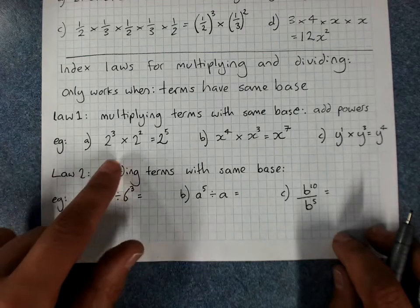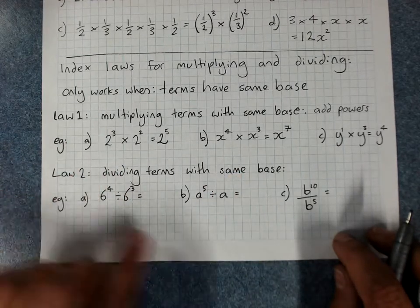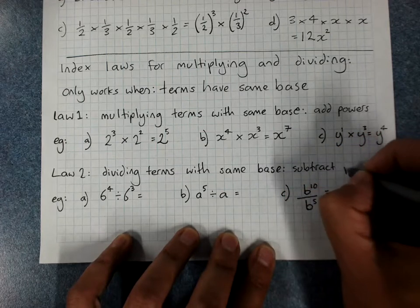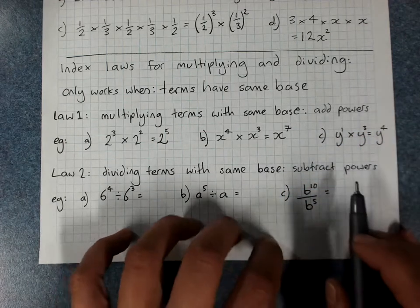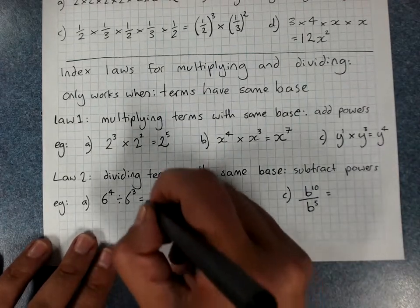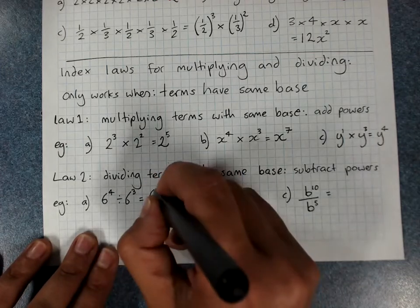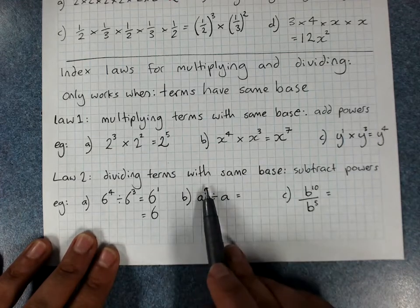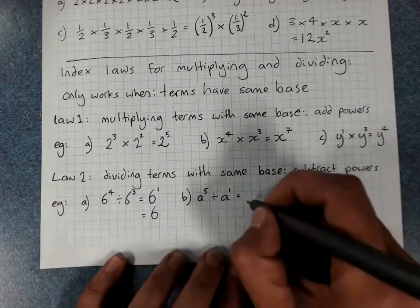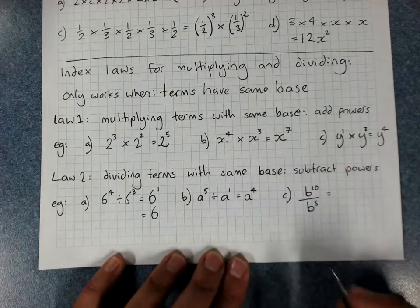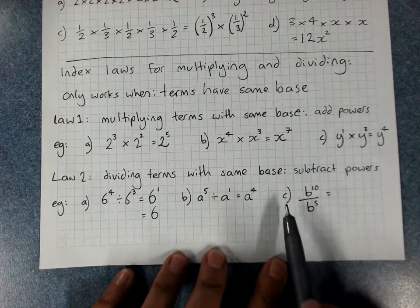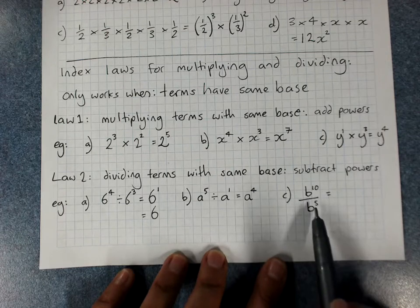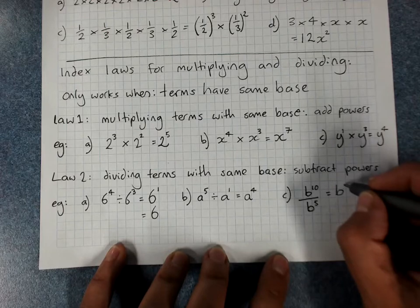The opposite applies for dividing with the same base, because multiplying and dividing are opposites. When multiplying, add the powers; when dividing, subtract the powers. So 6⁴ ÷ 6³: keep the same base, 4 minus 3 is 1, giving 6 to the power 1, or just 6. For A⁵ ÷ A: that A has a power of 1, so A to the power 5 minus 1 equals A⁴. A division written as a fraction works the same way: B¹⁰ ÷ B⁵ gives B to the power 5.